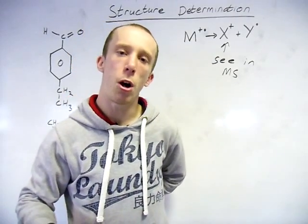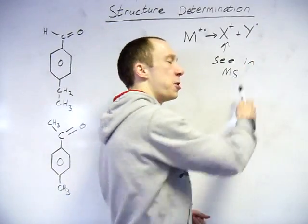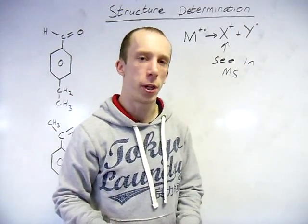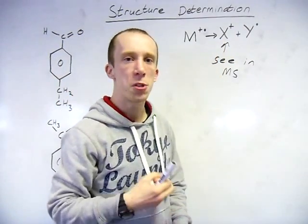Now it is only this which you will actually see in the mass spectrum, because obviously the positive charge - deflection, detection, things like that, which you should be aware of. Whereas the free radical there is not going to have any interaction with it. So it's always that which you see.